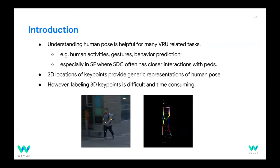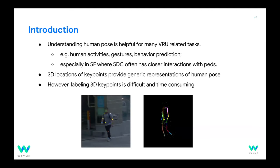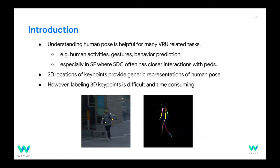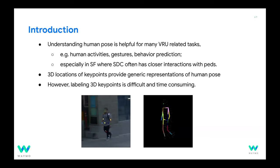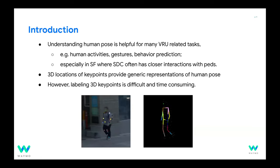Understanding human pose is really important for vulnerable road user tasks. We want to understand human activities — what they are doing, whether they're loading an object or riding a scooter — and we need corresponding reactions. Especially in dense urban areas like San Francisco, understanding pedestrian behavior through 3D keypoint locations is one of the key representations.